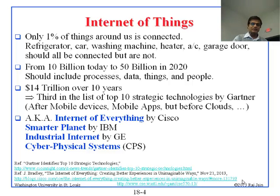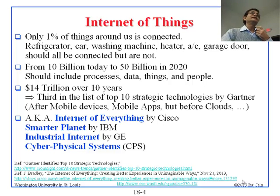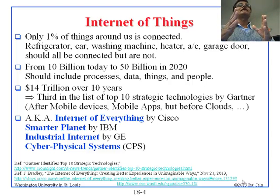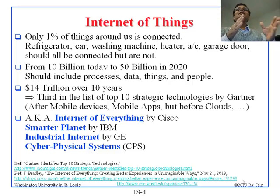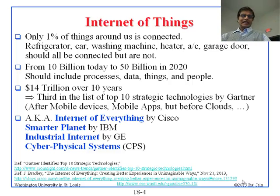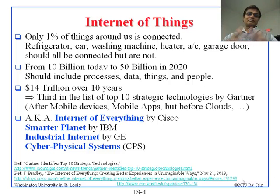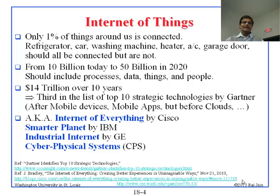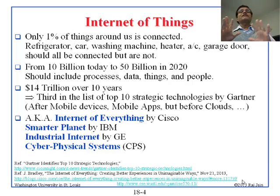There are other names for this. Cisco calls it Internet of Everything — they changed from IoT to IoE. The basic differentiation is that IoT does not include people, but if you include Internet of People and Internet of Things, it is Internet of Everything. IBM calls it a Smarter Planet where everything is smart — meaning connected and able to be controlled remotely. Industrial Internet by GE and Cyber Physical Systems by NSF. These are all different names for the same thing.